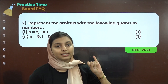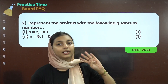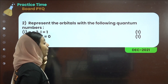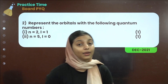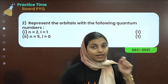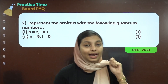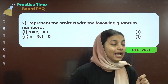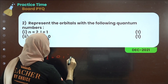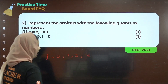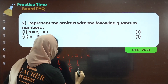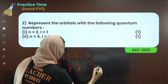We have the principal quantum number n, the azimuthal quantum number l, the magnetic quantum number, and the spin quantum number. The azimuthal quantum number l takes values 0, 1, 2, 3. Where 0 is the s orbital, 1 is p, 2 is d, and 3 is f.